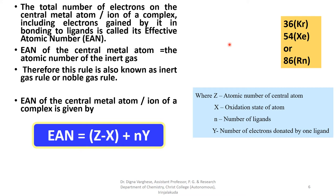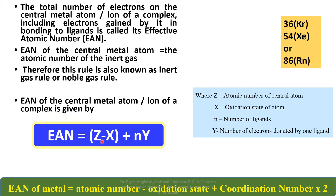For the cobalt hexamine complex, the atomic number of cobalt is 27, and the oxidation state X is +3. The number of ligands N is 6, since it is a hexamine complex, and Y equals 2 since each ammonia ligand donates 2 electrons. Therefore, EAN = 27 − 3 + 6×2 = 24 + 12 = 36. So, EAN of the metal atom equals atomic number minus oxidation state plus coordination number times 2.